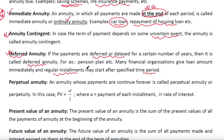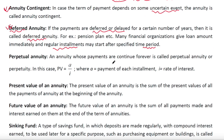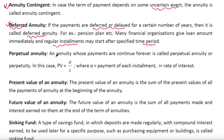Perpetual annuity — an annuity whose payments are continued forever. When payments are continued forever, it is called perpetual annuity.